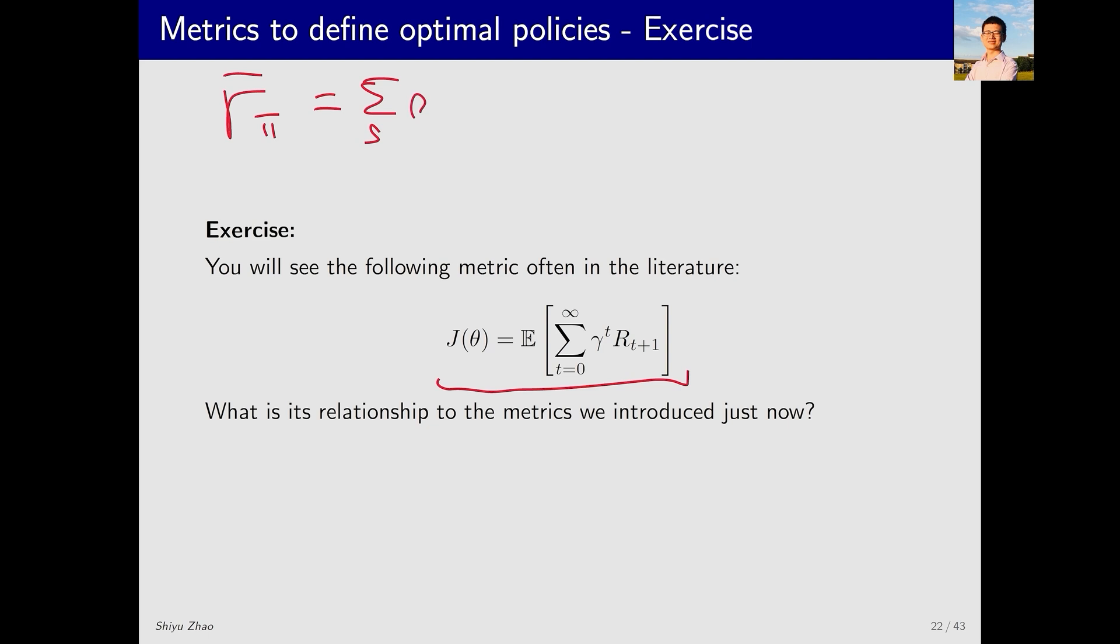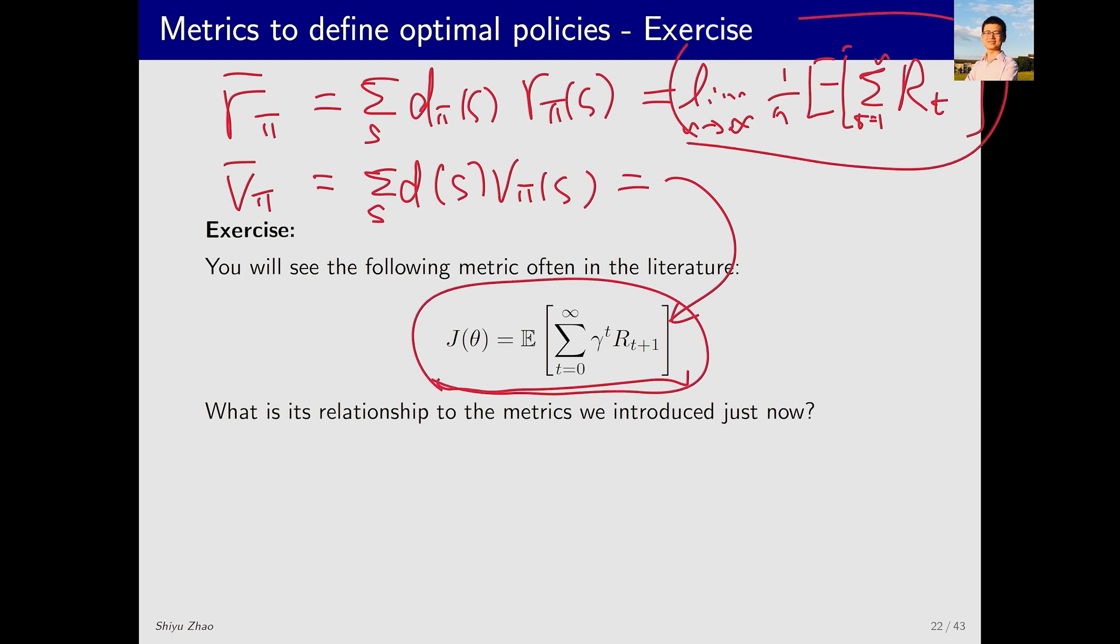Earlier we mentioned that r̄_π has two definitions. One is r̄_π equals sum over s d_π(s)r_π(s). Similarly, v̄_π also has two definitions. One is v̄_π equals sum over s d(s)v_π(s). The other is this equation. If you read policy gradient or actor-critic papers, you're very likely to encounter one of these two equations. Whether this one or this one, I hope you can recognize them immediately because we've covered them in this course.